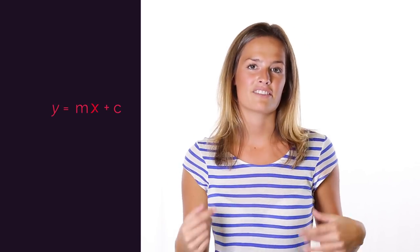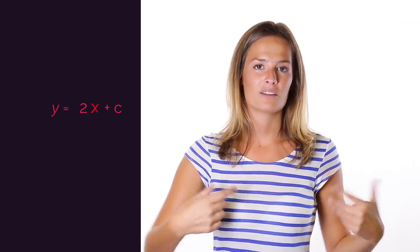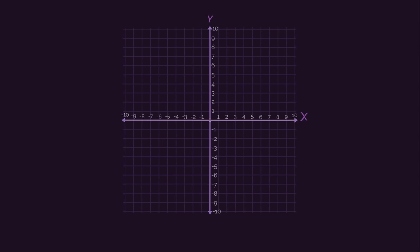So now using the y equals mx plus c format, we already know the gradient m is 2, and we just need to find the y-intercept. We could just look back at the graph and see that the y-intercept is negative 5. So the equation would be y equals 2x minus 5.